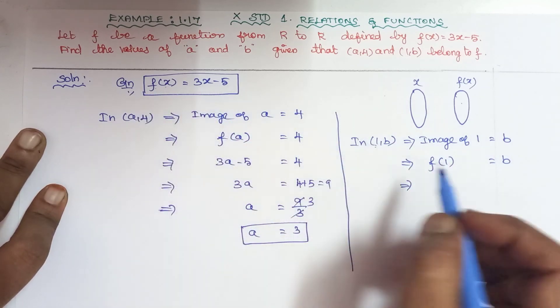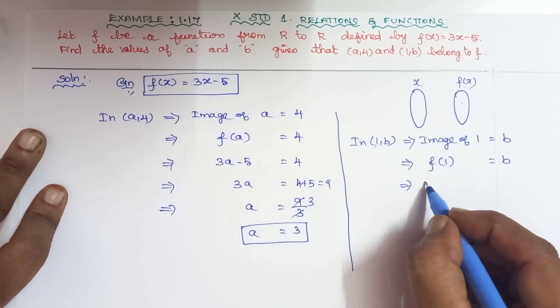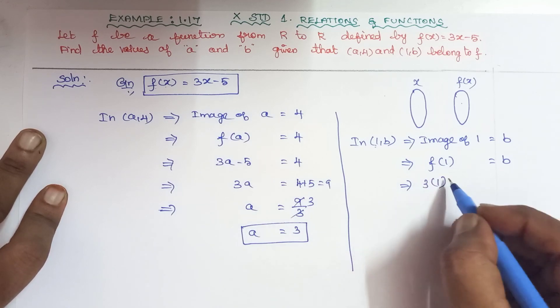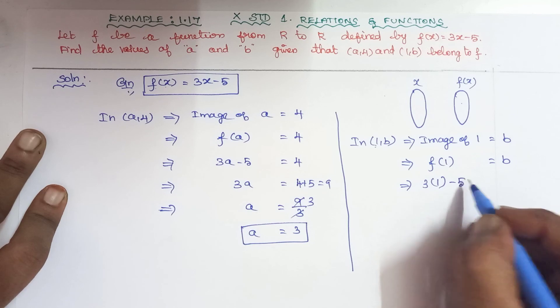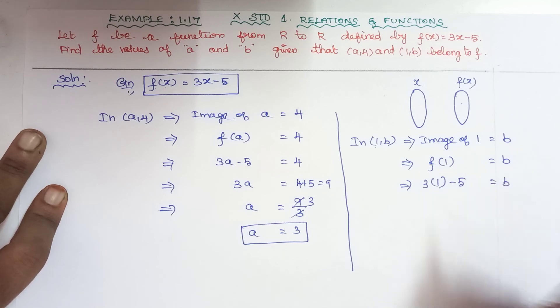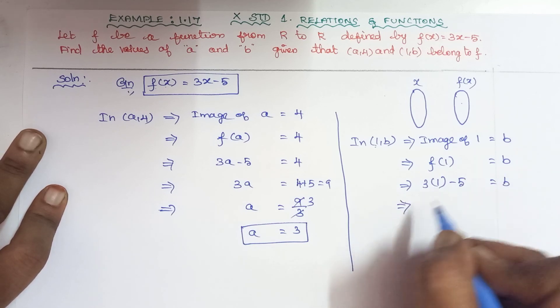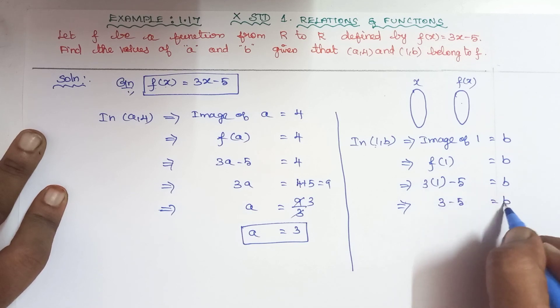So we can write 3(1) - 5 = b. Simplifying, 3 - 5 = b, which gives us b = -2.